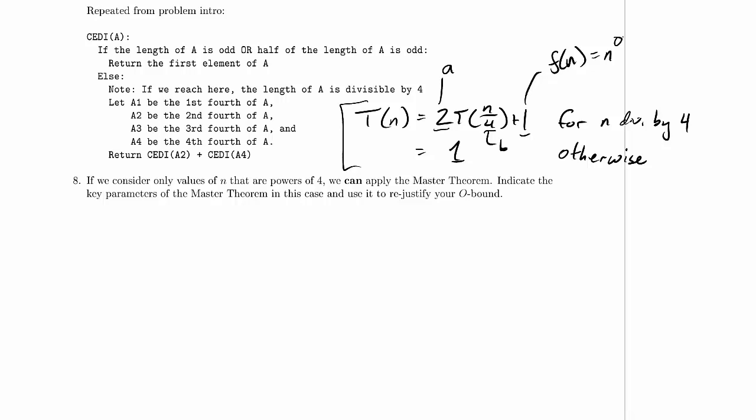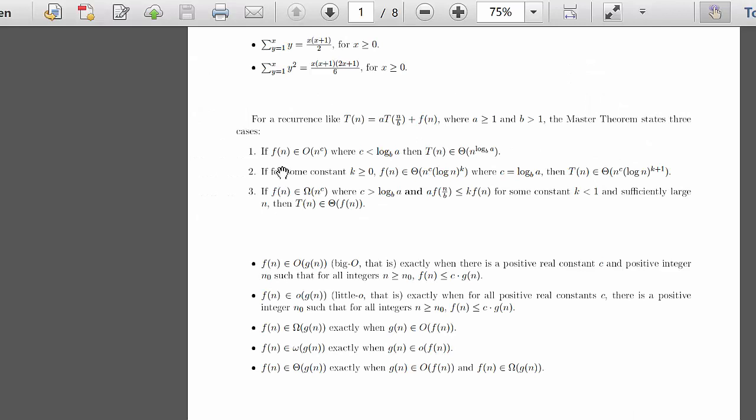f(n) being 1 is the same as f(n) being equal to n to the 0. So when we're looking for that c parameter that we're going to see next, we probably want this to be our c. So is f(n) an element of big O of n to the 0? Yeah, definitely. In fact, it's big theta of n to the 0, so it's certainly big O of n to the 0.